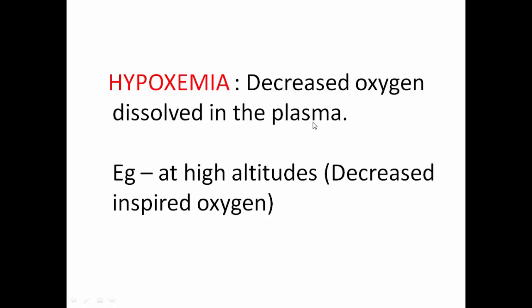Now let's move on to hypoxemia. When we talk about hypoxemia, we are talking about oxygen dissolved in the plasma. What happens is when you breathe, oxygen goes through your alveoli, gets into the capillaries, and before being attached to the hemoglobin it is in the plasma. The oxygen dissolved in the plasma then gets attached to the hemoglobin. A decreased quantity of oxygen dissolved in the plasma is hypoxemia, which you will see at high altitudes where the inspired oxygen itself is decreased.